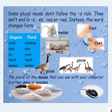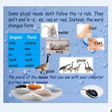Some plural nouns don't follow the -s or -es rules — the whole word changes. For example: child/children, man/men, ox/oxen, tooth/teeth, woman/women, goose/geese, mouse/mice. We don't just add -s or -es; we change the word entirely.